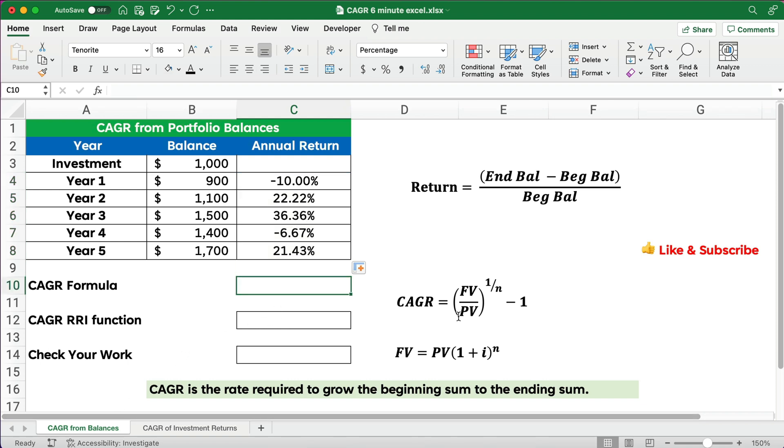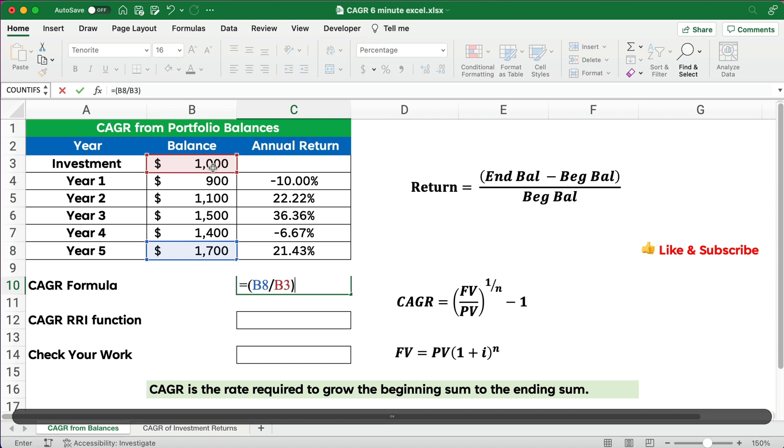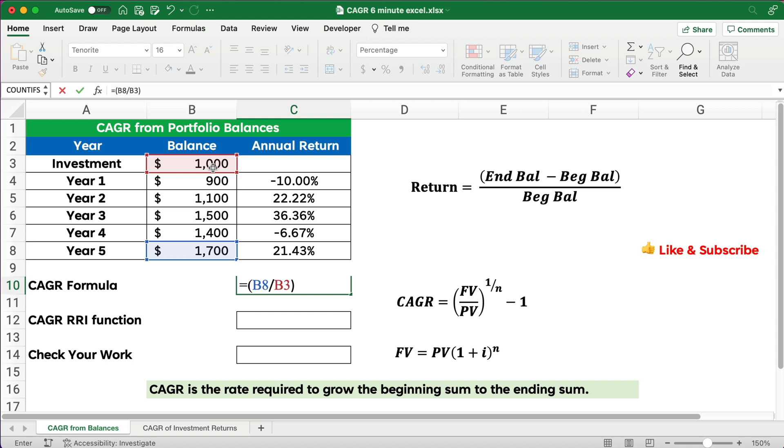So our CAGR formula, simple formula, is future value divided by the present value to the exponent 1 over n minus 1. So let's just do the math on it and there's an easier way we'll do it in just a second. But here's our formula if you want to do it by hand. So $1,700 divided by the 1,000, so the future value divided by the present value. That will give us a $700 return and as a percentage.